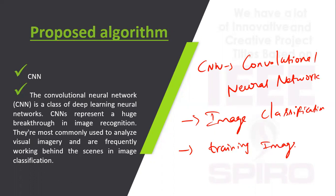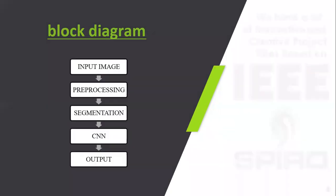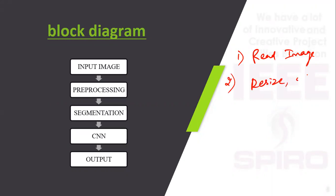Looking at the block diagram: first of all, the input image is read into MATLAB — here hyperspectral images. Then pre-processing involves resizing the input image and enhancing the input image. These techniques come under pre-processing. Then segmentation means to extract the disease part from the image.